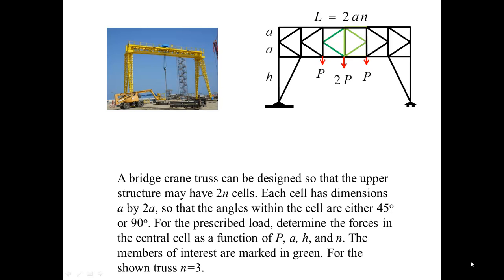This problem is pretty typical of trusses used in cranes. The problem as shown involves six cells. Each cell is of size 2a by a, so that all the angles in the cell are either 45 or 90 degrees.